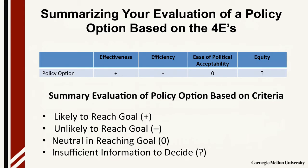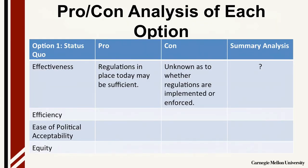The next step is to evaluate each policy option independently using the four E's by creating a matrix. One approach is to put a positive sign if the goal is likely to be reached, a negative sign if it's unlikely to be reached, a zero in situations where the positive and negative aspects are likely to balance each other out, and a question mark if there is insufficient information to evaluate the situation. You can always add multiple symbols to indicate degree if the situation looks particularly strong or negative. The next step is to do a pro-con analysis for each option for each criteria, illustrated here for the status quo.